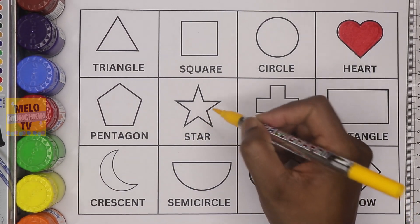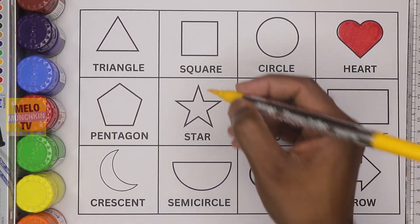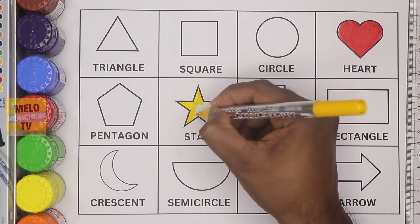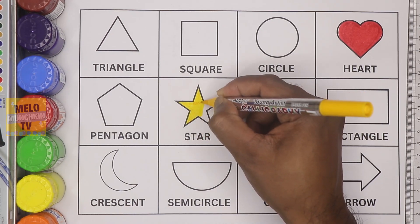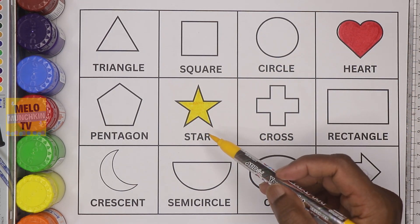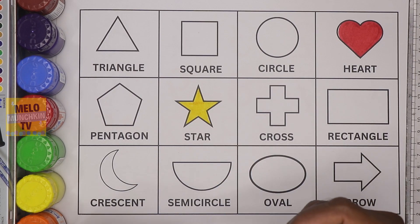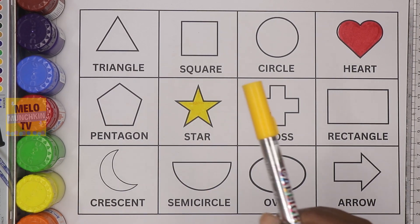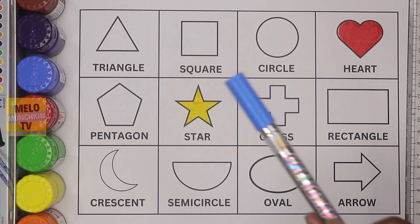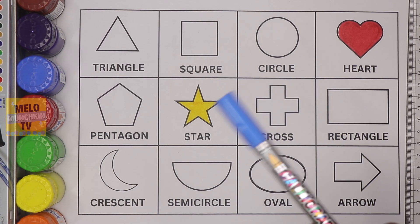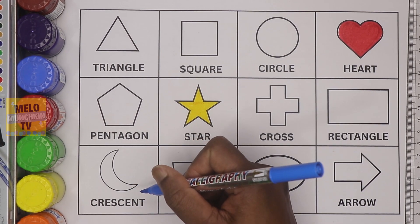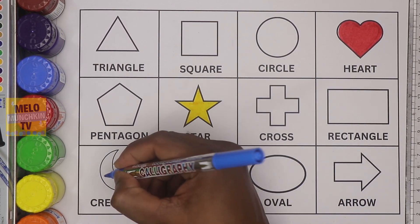Next, I'll take yellow color and color this shape. This is star. Okay, so this is star shape and the color is yellow color. Next, I'll choose blue color to fill this shape. This is crescent. This is crescent. Let's color it.